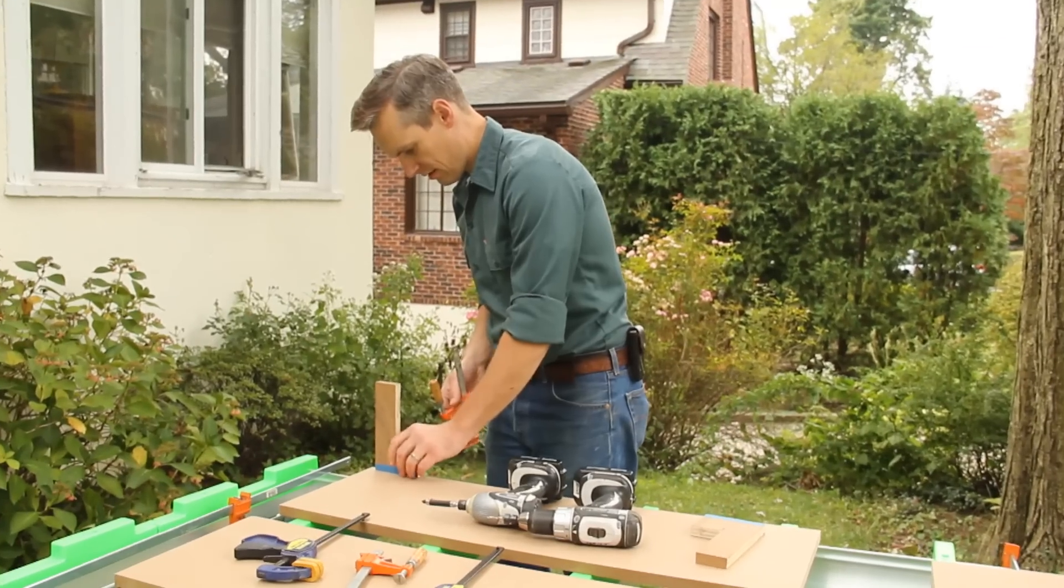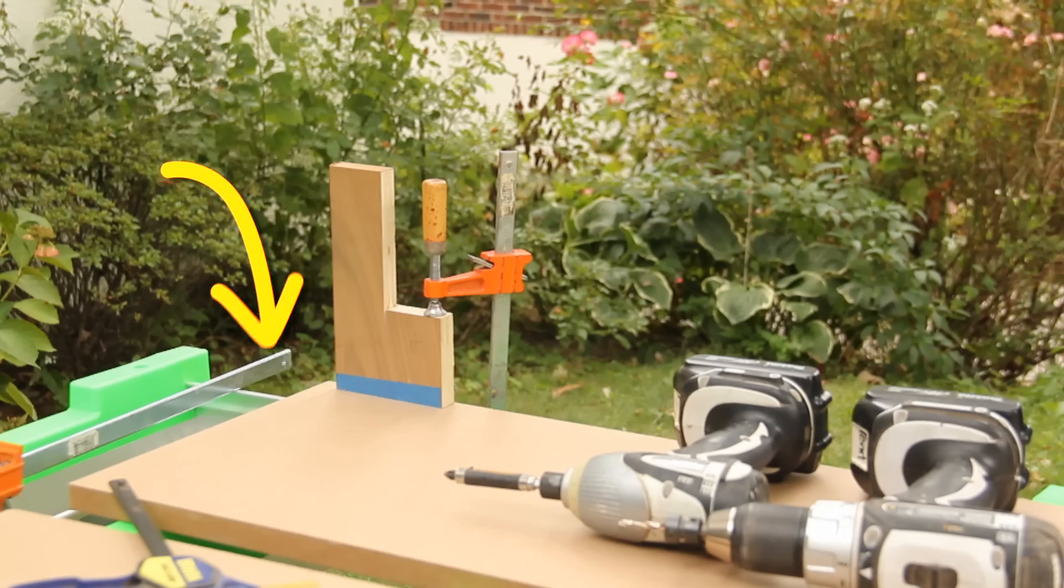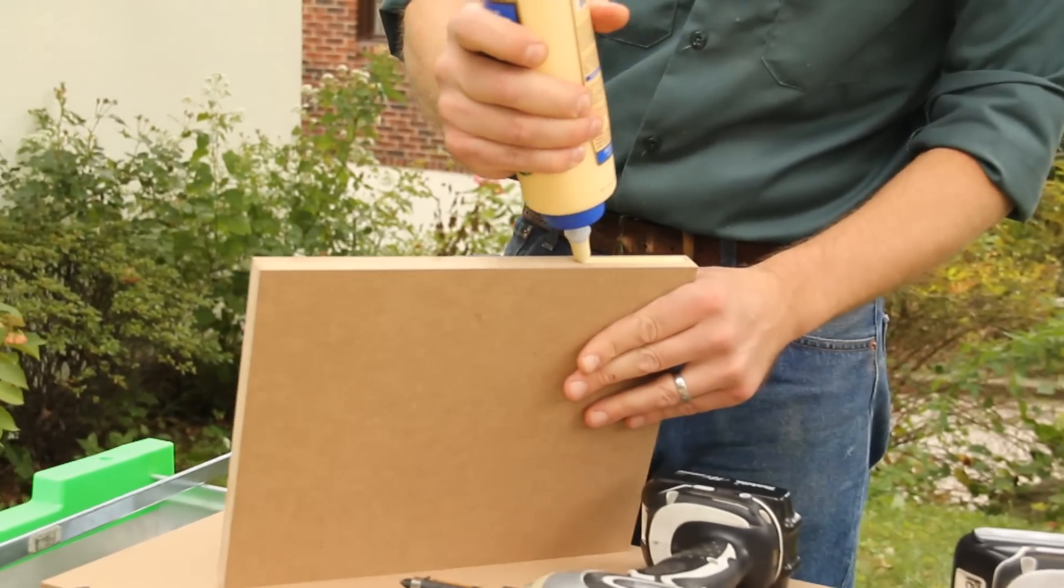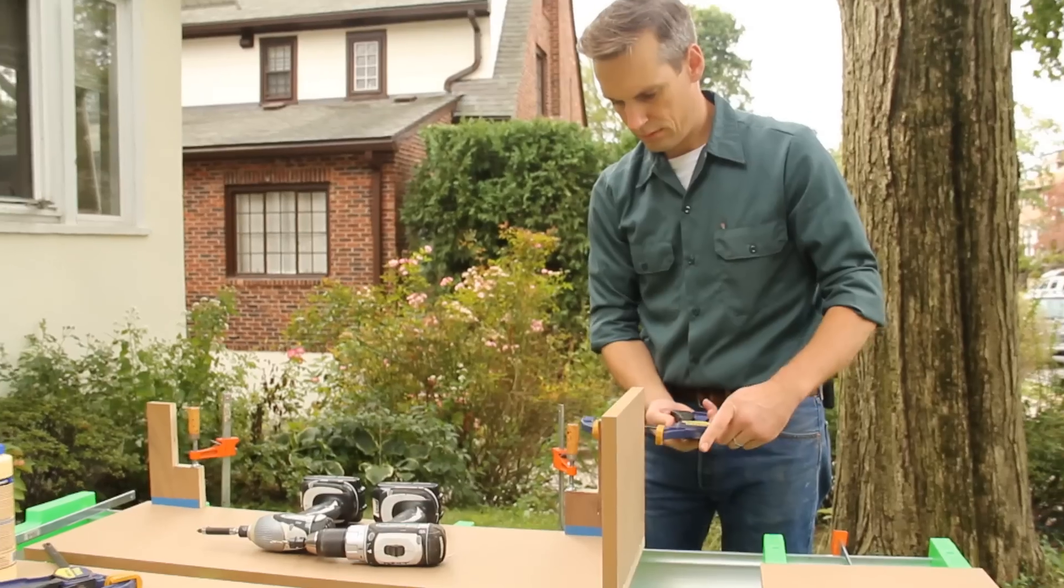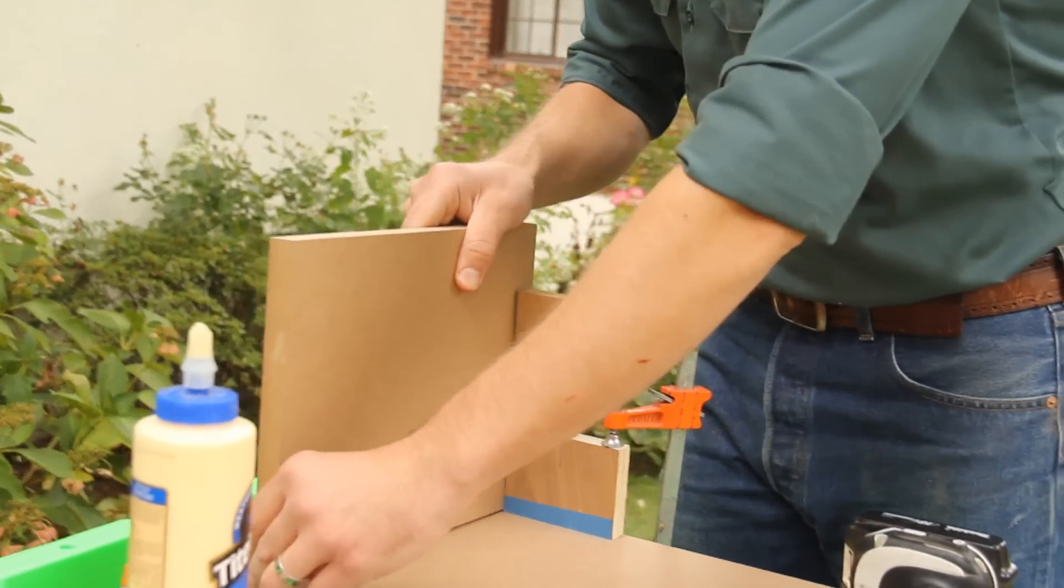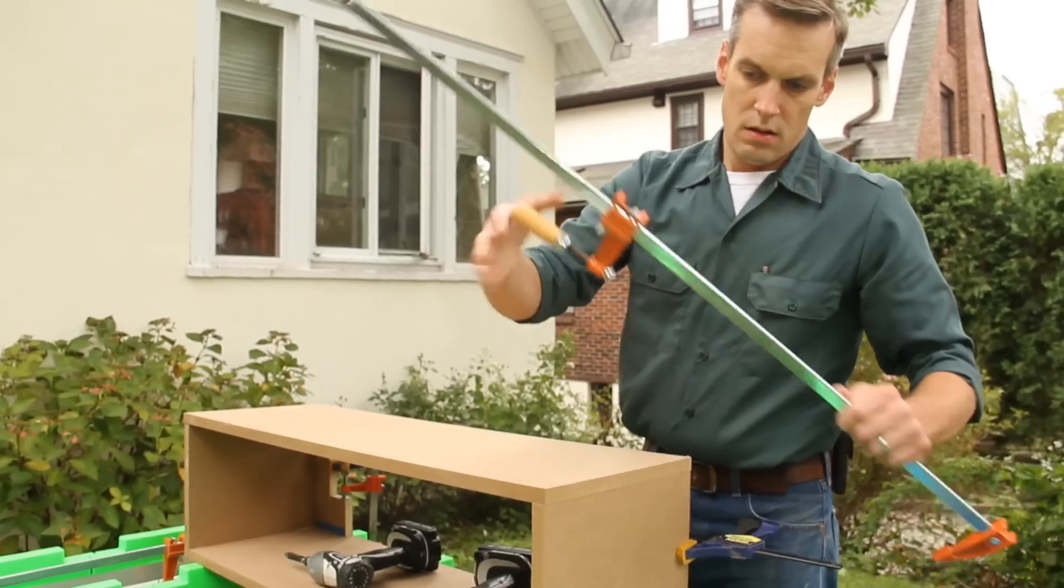To actually build the storage boxes, clamp squared off blocks to the bottom piece, leaving just enough space for each side piece. Run a bead of construction adhesive along the edge of the side piece and clamp it upright against the block. Do the same thing for the other side. Then glue the top in place and hold it there with long bar clamps.